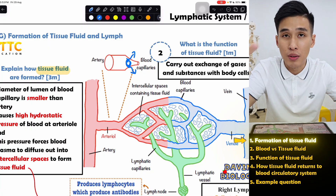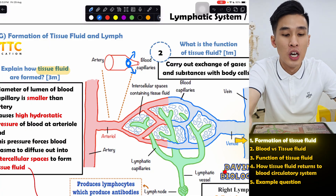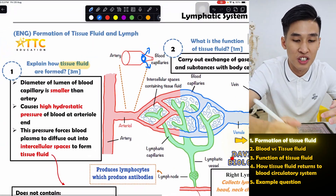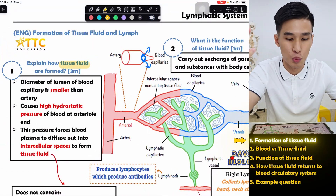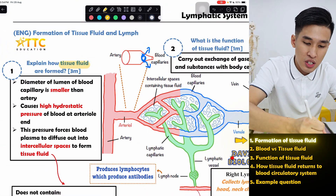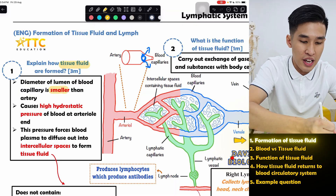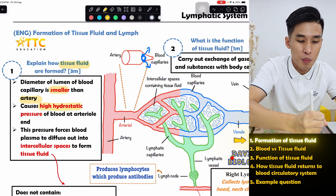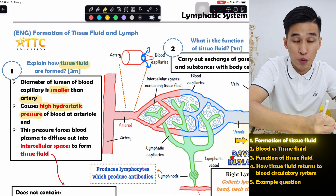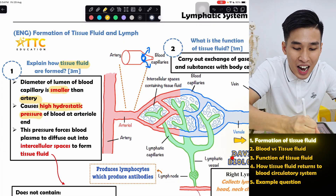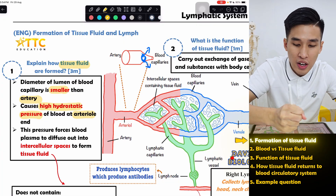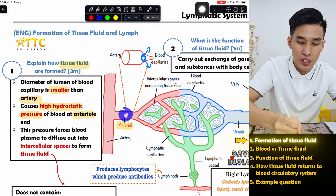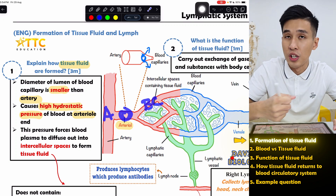Once the blood comes out, this is called tissue fluid. For exam answers, you should mention the difference in lumen size — blood capillary is smaller than artery — which causes high hydrostatic pressure at the arterial end. The arterial end is the point between your artery and your blood capillary.